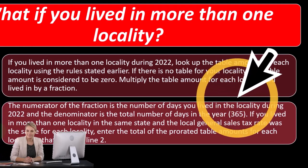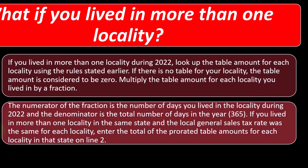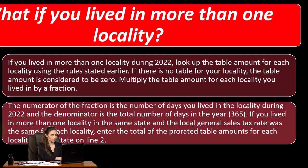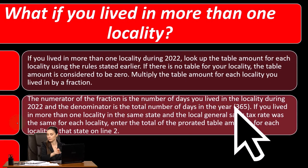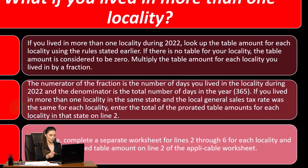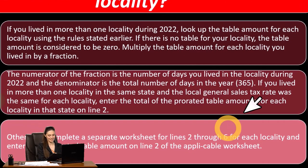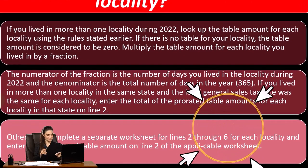If you lived in more than one locality in the same state and the local general sales tax rate was the same for each locality, enter the total of the prorated table amounts for each locality in that state on line two. Otherwise, complete a separate worksheet for line two through six for each locality and enter the prorated table amount on line two of the applicable worksheet.